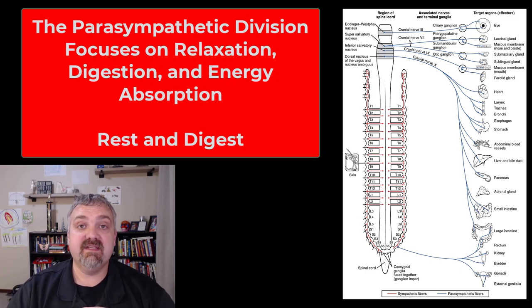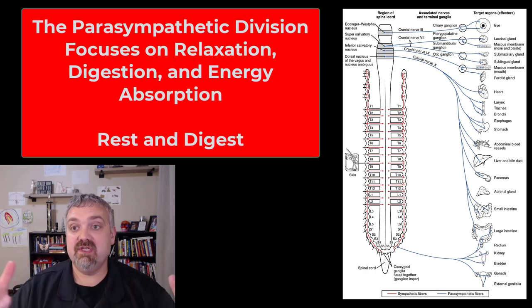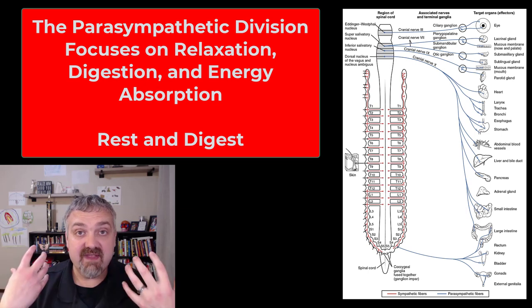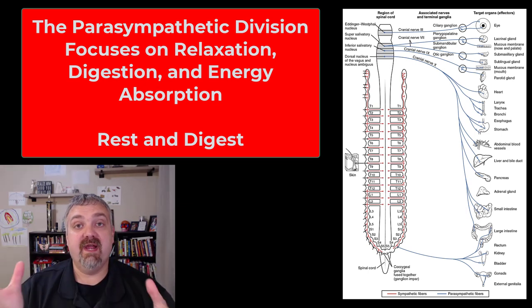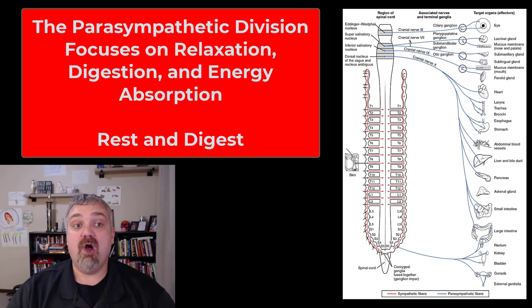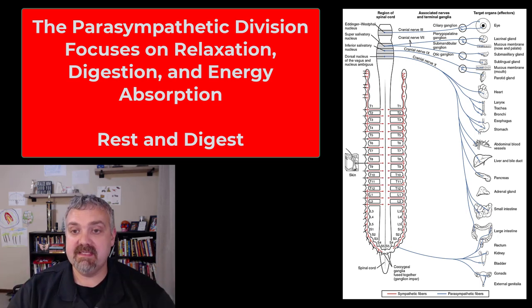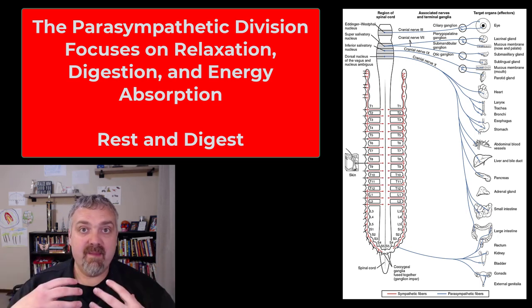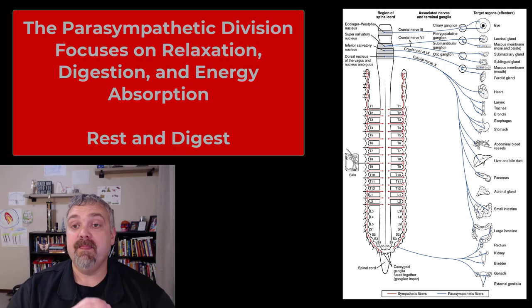The parasympathetic system really focuses on food processing, relaxation, and absorption of energy — this rest and digest system. It's where you're trying to rebuild and conserve energy. Some people call this the anabolic system because its job is to increase the amount of nutrients in your blood and stored in your body. You're storing up energy so your sympathetic system can mobilize and use it.